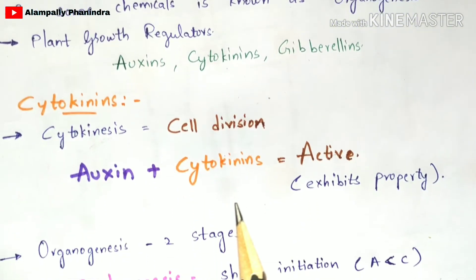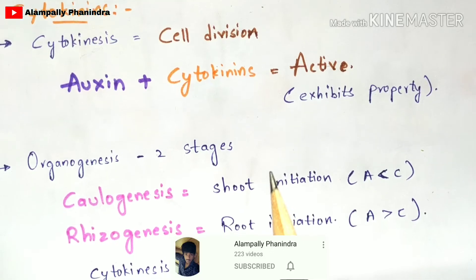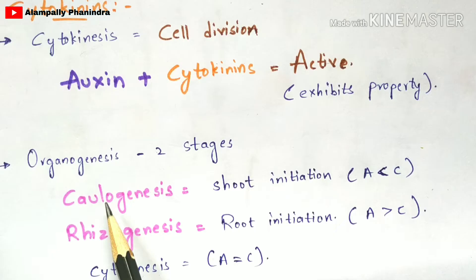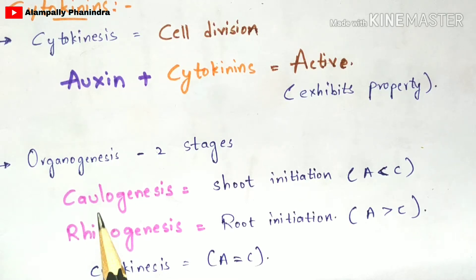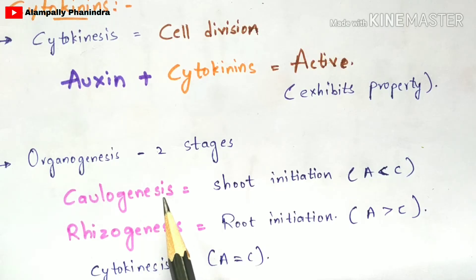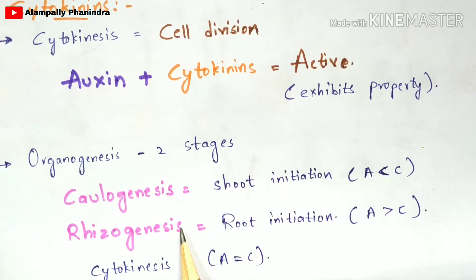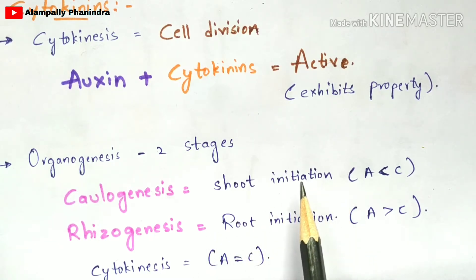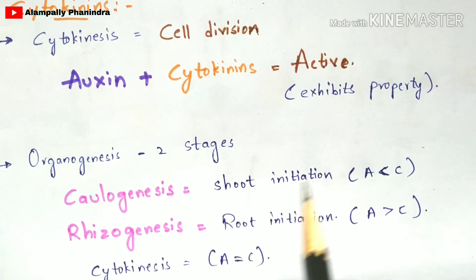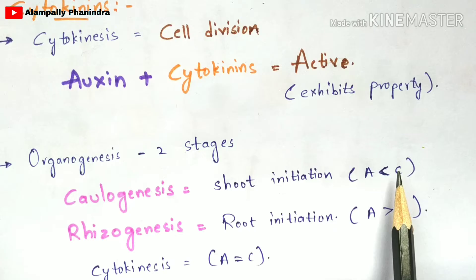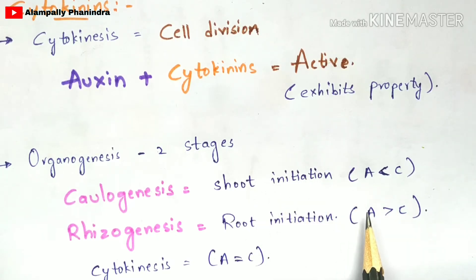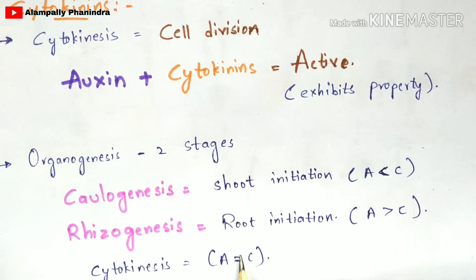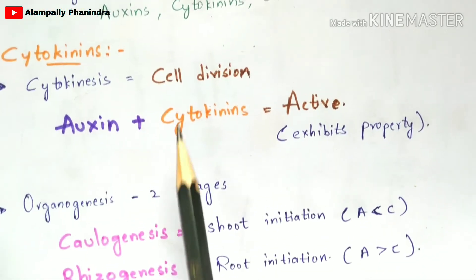Organogenesis occurs in two stages: either caulogenesis or rhizogenesis — one of these will occur. Caulogenesis is shoot initiation, and rhizogenesis is root initiation. When the concentration of auxin is low compared to cytokinin, shoot initiation occurs. When auxin concentration is high compared to cytokinin, root initiation occurs. When both auxin and cytokinin concentrations are equal, the cytokinesis process — cell division — occurs.